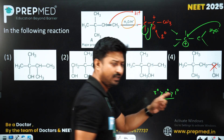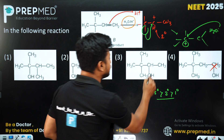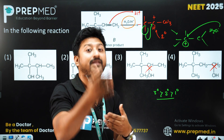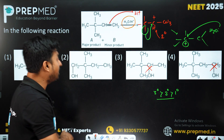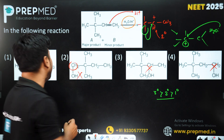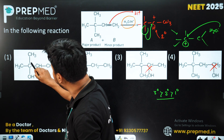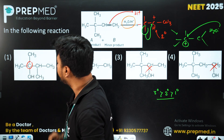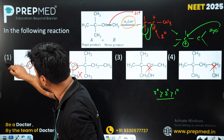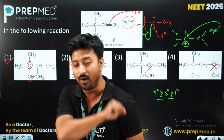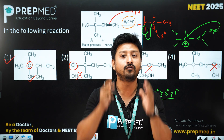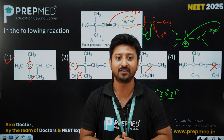This product is not a tertiary alcohol — this is a primary alcohol. This product forms before the methyl shift, so this is not the major product. Option 2 is also a primary alcohol, so it is definitely a product but not major. Therefore, the correct answer will be Option 1. I hope you liked this PYQ. Stay tuned to PrepMed channel for more updates and more PYQs. Thank you.